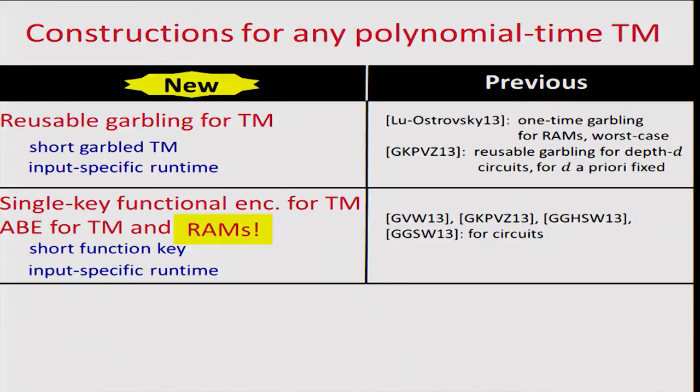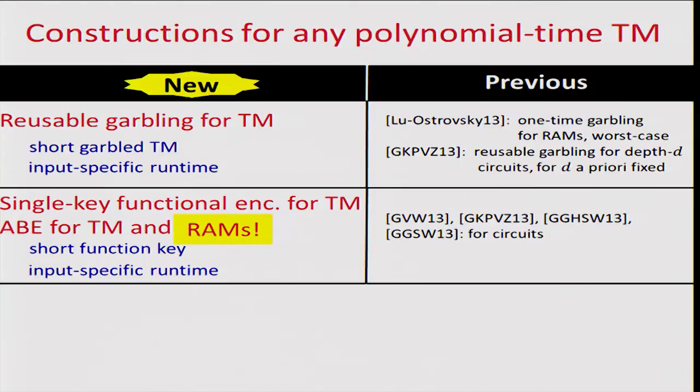Second, we provide single-key functional encryption for Turing machines, and attribute-based encryption for Turing machines and for RAMs as well. In functional encryption and attribute-based encryption, one provides a key for a function — in our case, keys are for Turing machines. These keys are short, depending only on the description of the Turing machine and not on its running time. We also achieve input-specific runtime. The prior state of the art was for circuits, due to Gorbunov et al., Goldwasser et al., and Garg et al.